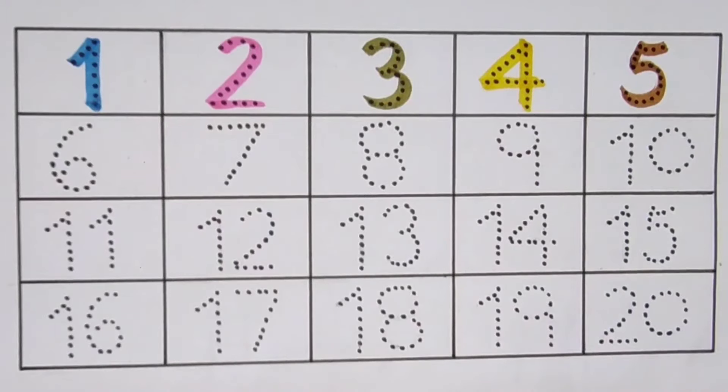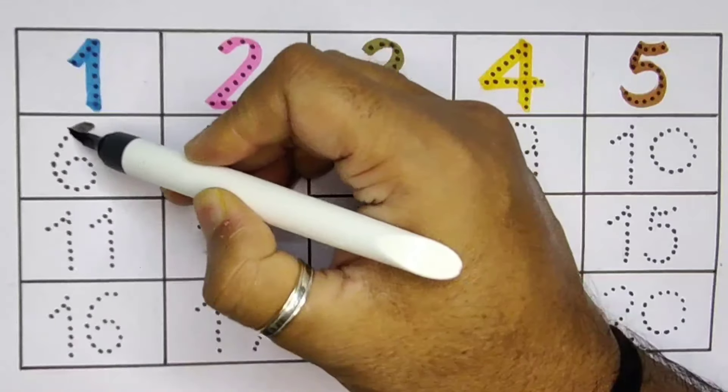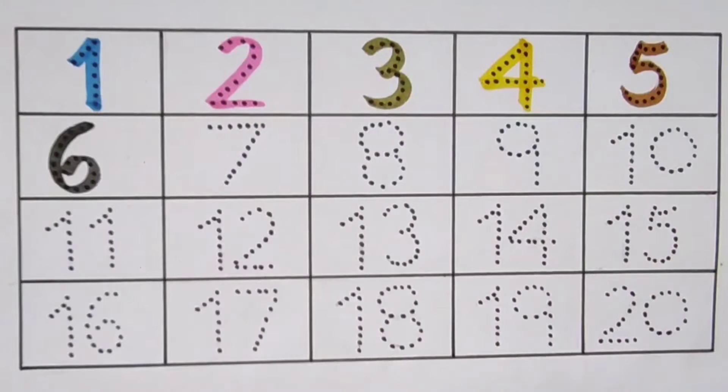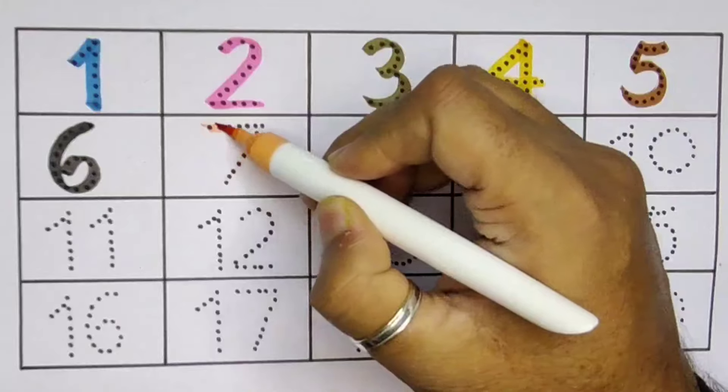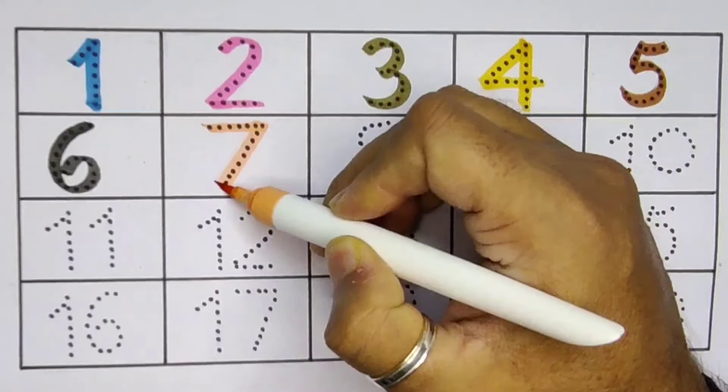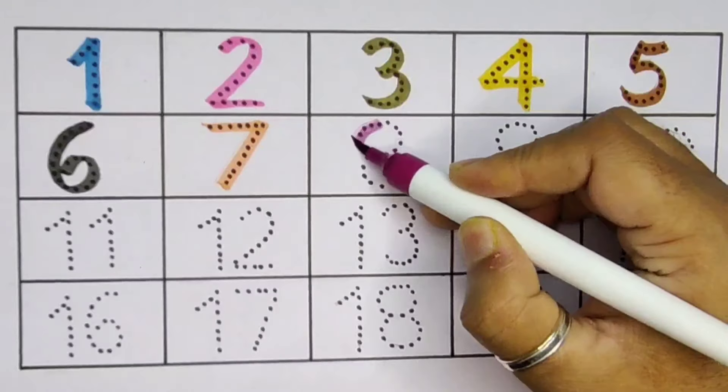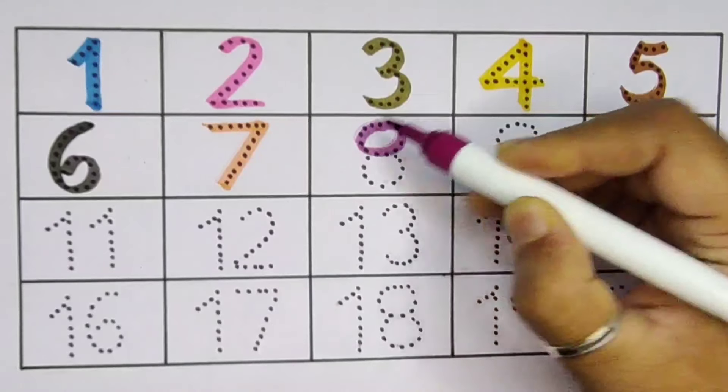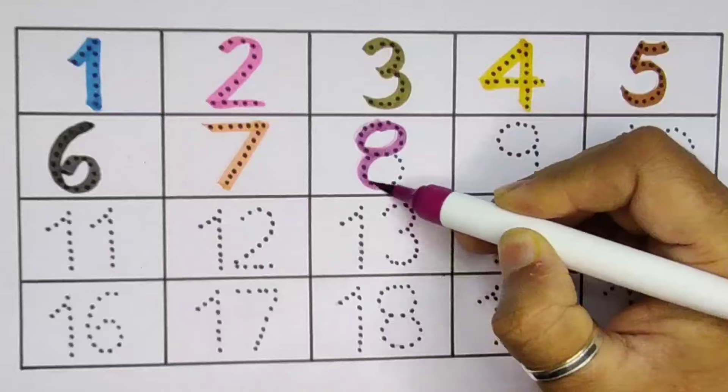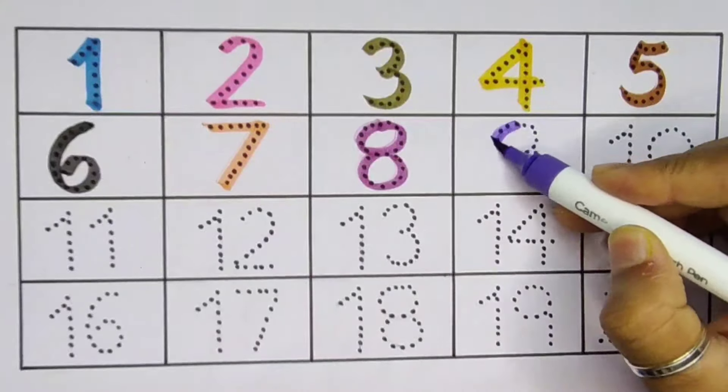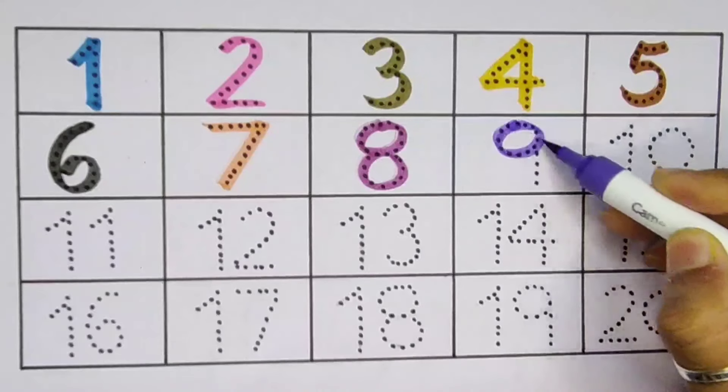Next 6, number 6. Next kids 7, number 7. Next 8, number 8. Next kids 9, number 9.